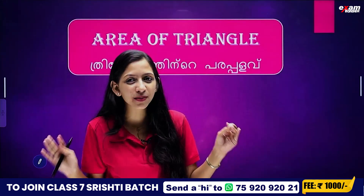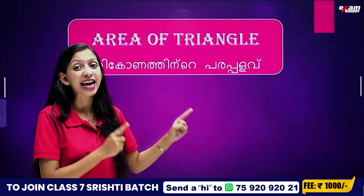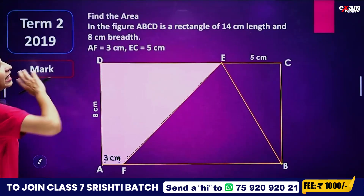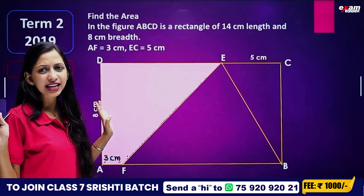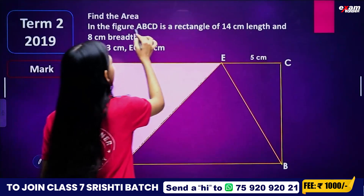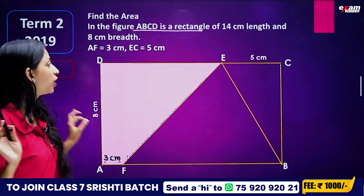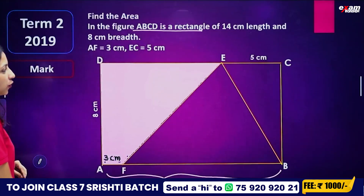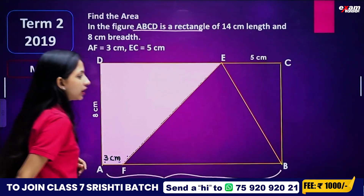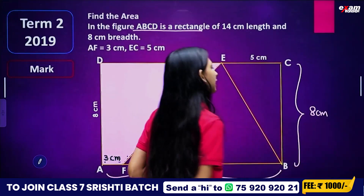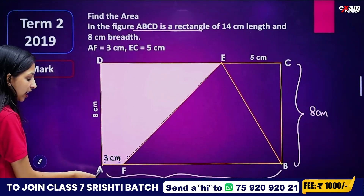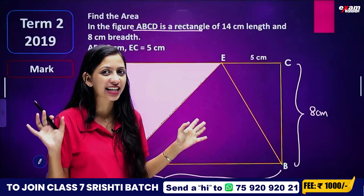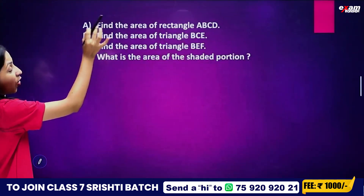We have a question: if you have a figure, find the area. You can find the area and find the shaded region. ABCD is a rectangle. The length is 14 cm and the breadth is 8 cm. The width of our figure is 3 cm and 5 cm for different parts. Find the area of rectangle ABCD.